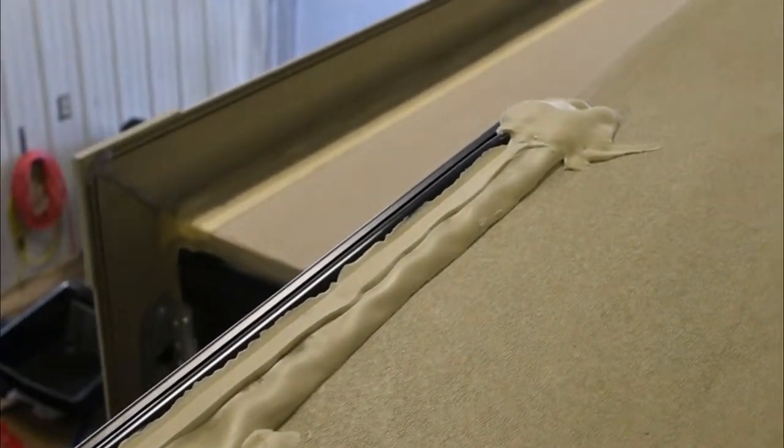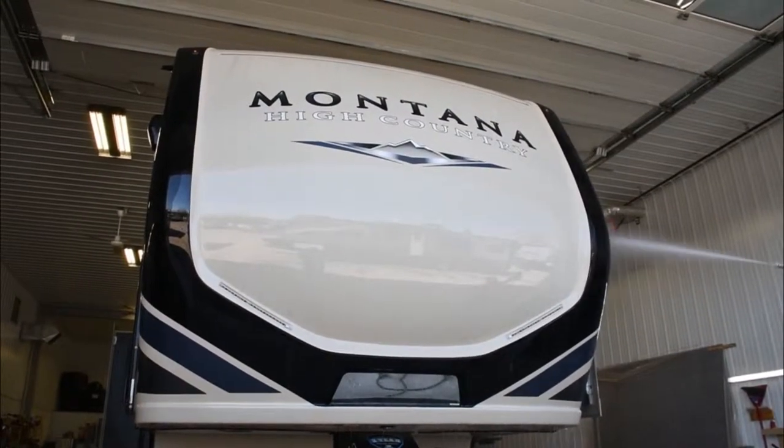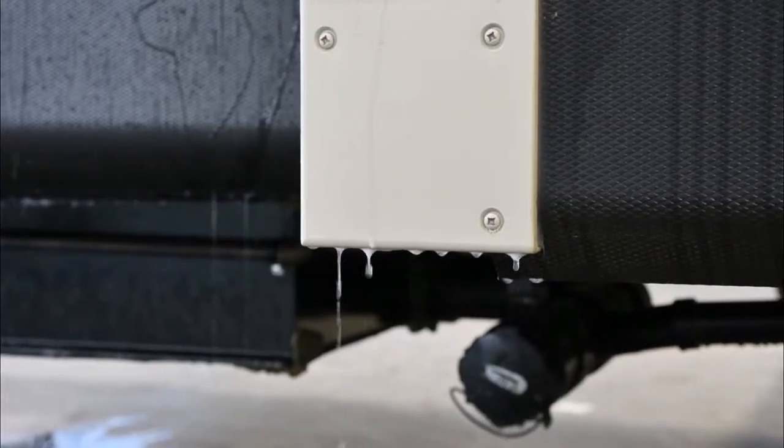Once the inspection and repairs have been completed, we then give the RV a good wash and shine to remove the soapy solution.